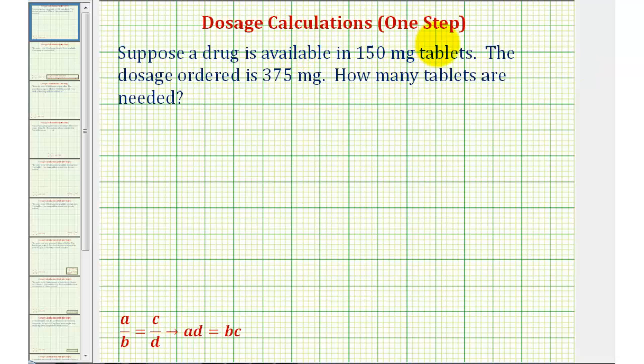Welcome to the first example of a one-step dosage calculation. To determine the dosage, we'll be using a proportion, which we see here below, which is formed by setting two ratios or rates equal to each other.